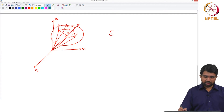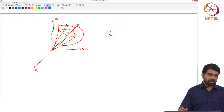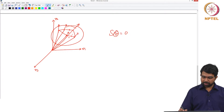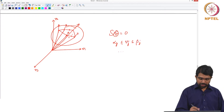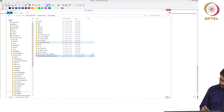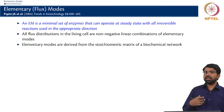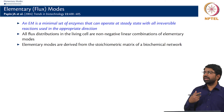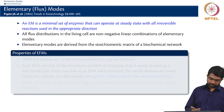Elementary modes are on the left null space of the stoichiometric matrix. You are saying SV = 0, and these are all the Vs that satisfy SV = 0, along with all the other conditions. So it is a part of the space of all possible flux solutions. Elementary modes are basically derived from the stoichiometric matrix directly, but they are computationally very expensive to compute.